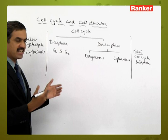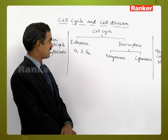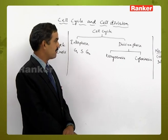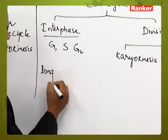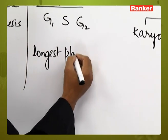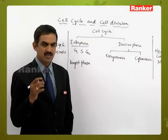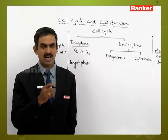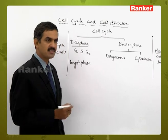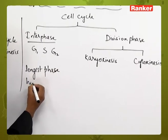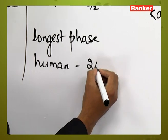In the cell cycle, out of all the changes taking place, interphase is considered to be the longest phase, which takes the most time. It is not compulsory that all animals or all plants should have the same time period for interphase. Here, for human beings, it is 24 hours.